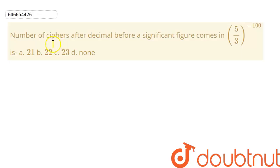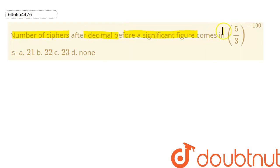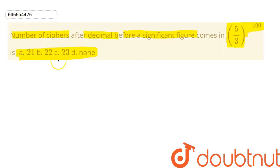Hello everyone. Today we are going to discuss one question on logarithms. We need to find the number of ciphers — the number of zeros which exist between the decimal point and before the first significant figure. We are given the number (5/3) raised to the power minus 100, and four options to choose from.